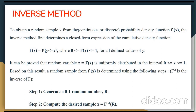Hi, good morning friends. Today we are going to discuss the topic of the Inverse Transform Method. The inverse transform sampling is also known as inversion sampling or the inverse probability integral transform. It is the basic method for pseudo-random number sampling — that is, for generating sample numbers at random from any probability distribution given its cumulative distribution function.